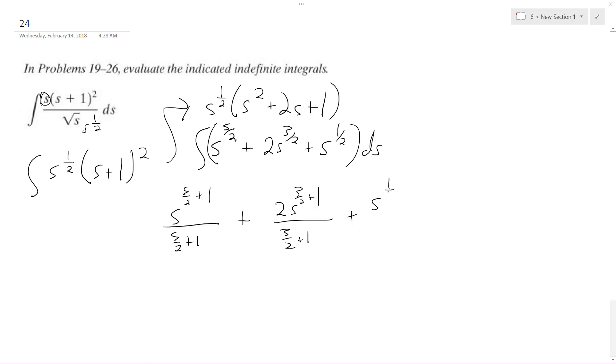And finally, s to the one-half plus one over one-half plus one, plus c. So what we have here, this equals seven-halves. I flip that to get two-sevenths s to the seven-halves. This is the same thing as five over two.